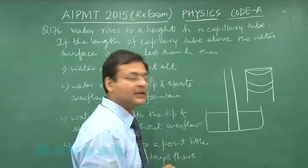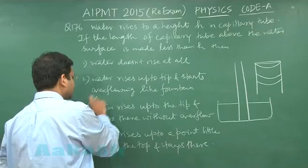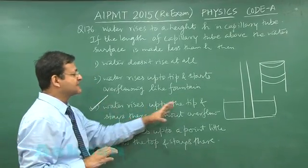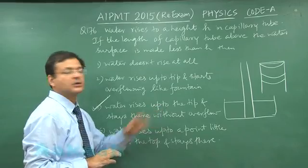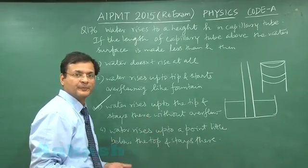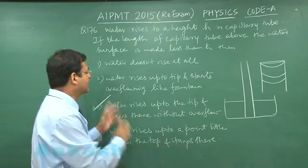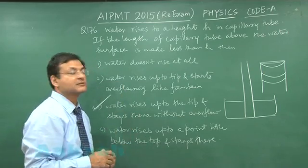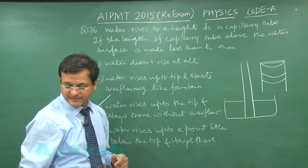So the water stays there only. For that reason, the third option is the most appropriate, which says that water rises up to the tip and stays there without overflowing. It will never overflow — it will rise up to that point. So the third option is the correct answer. Now switch over to the next question, that is question 177.